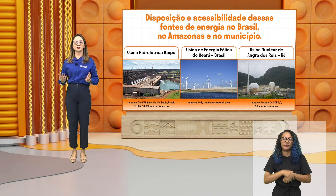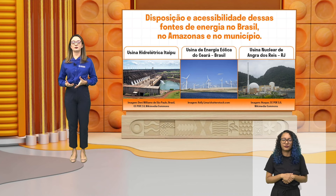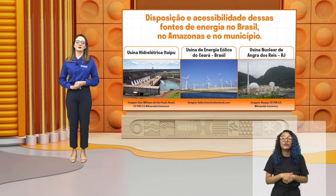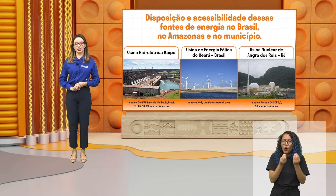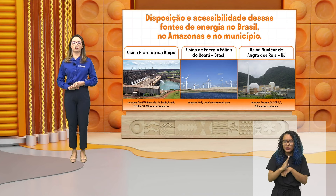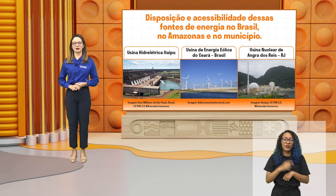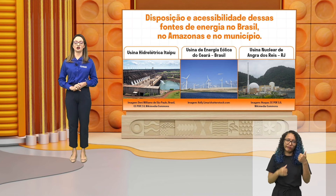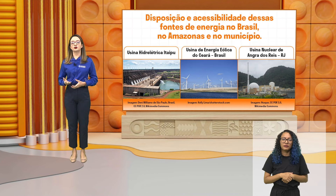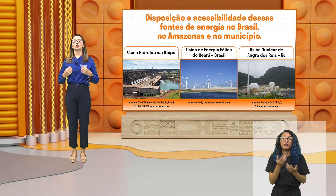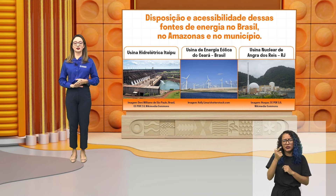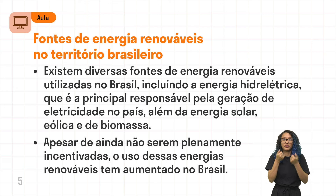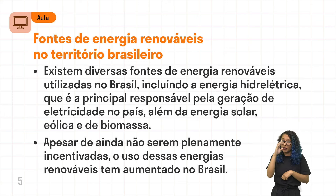Let's go to Geography and the accessibility of these sources of energy, both in Brazil and in the state of Amazonas. We will observe some of this information, some characteristics, advantages and also some disadvantages of these sources of energy. We have, initially, as fontes of renewable energy, which we will observe in the Brazilian territory.